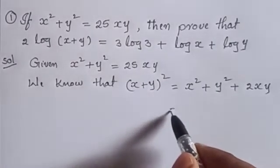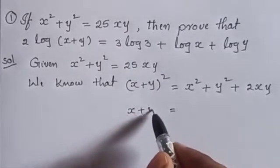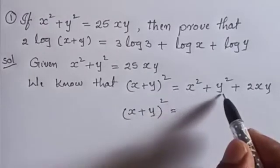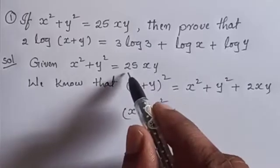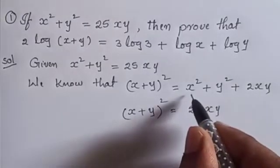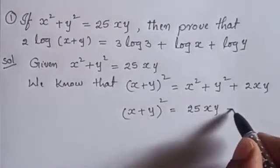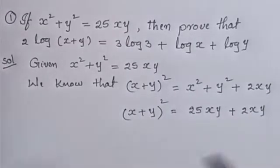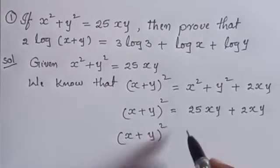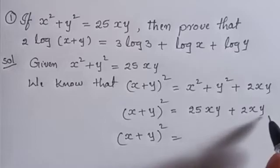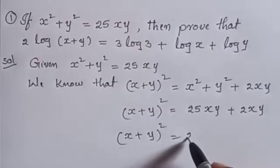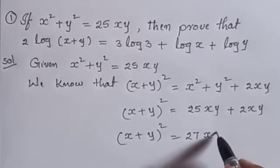In this formula, you can write x plus y whole square is equal to x square plus y square, which is equal to 25xy, plus 2xy. Then it will be 25 plus 2, which is 27xy. So x plus y whole square equals 27xy.